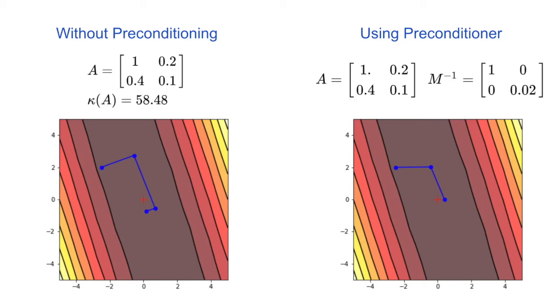Now let's take a look at the example with preconditioning and without preconditioning. On the left, we have the original matrix and the original solution of gradient descent, where we could not converge to the true optimum value. When we apply the preconditioner for this matrix, we can see that in three steps, we are much closer to the optimum value than when we tried to solve the problem without using preconditioner.